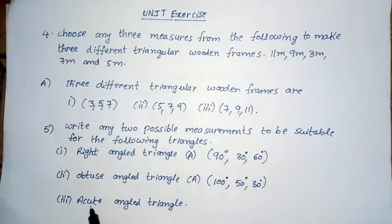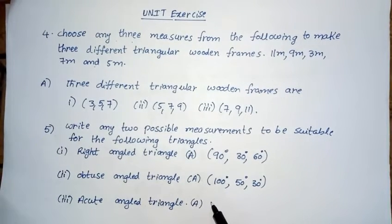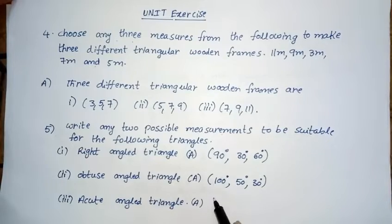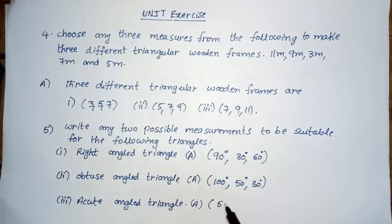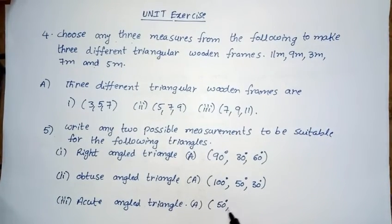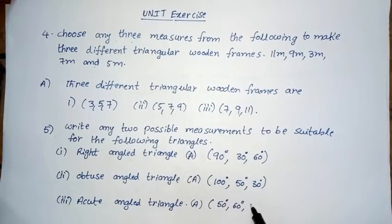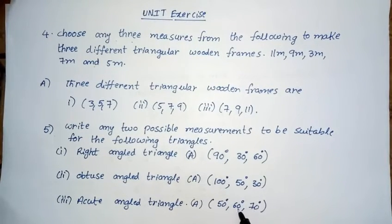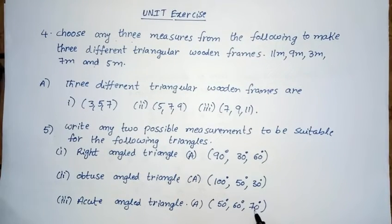Next one — acute angle triangle. In an acute angle triangle, the three angles must be less than 90 degrees. I am choosing all three angles less than 90 degrees: 50 degrees, 60 degrees, and 70 degrees. Observe: 50 plus 60 equals 110, and 110 plus 70 equals 180. So the sum of the three angles equals 180 — condition satisfied.